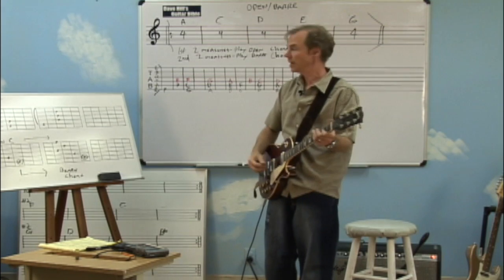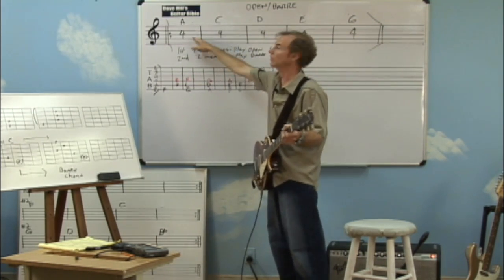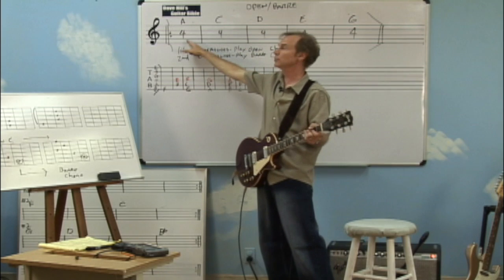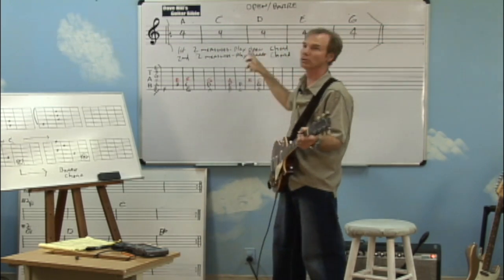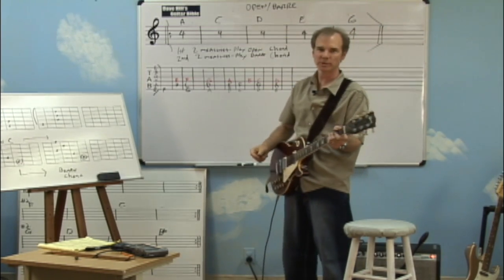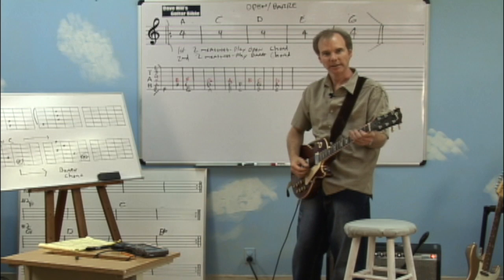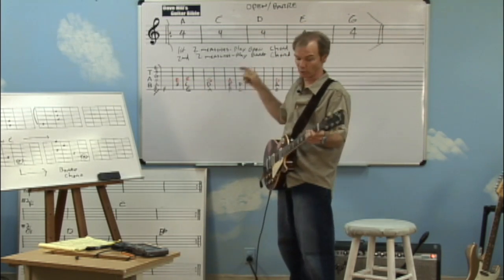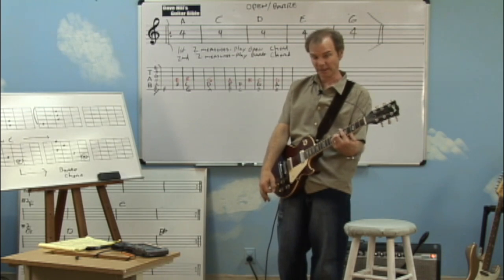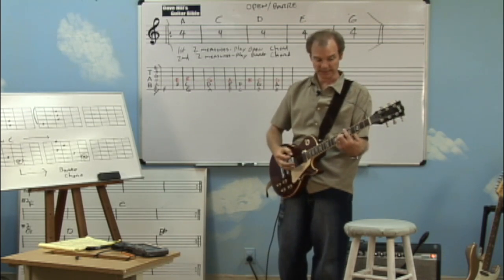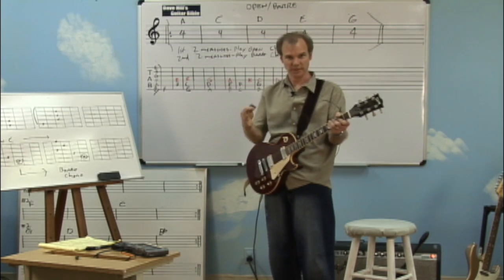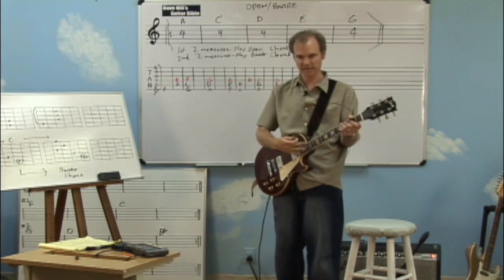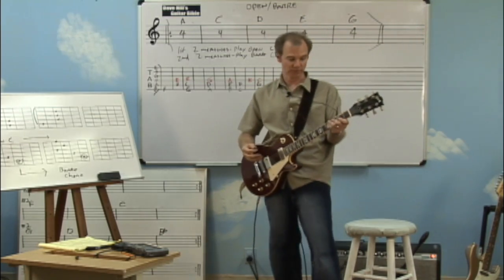What we're going to do is use a little system here. We're going to play each of these chords for four measures. The first two measures we're going to play the open version of the chord. So if we have four measures, we'll play the first two as an open A chord, and then switch to the last two measures and play a barre chord version of it. This way we'll be able to test our knowledge of where the notes are on the roots on the sixth string or the fifth string, plus the open roots.